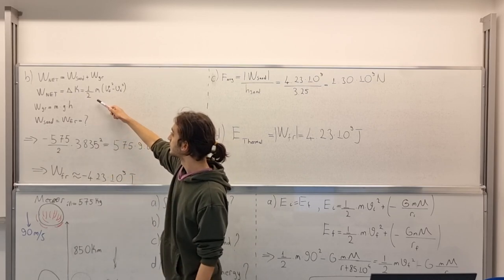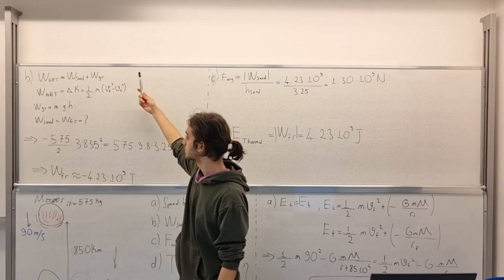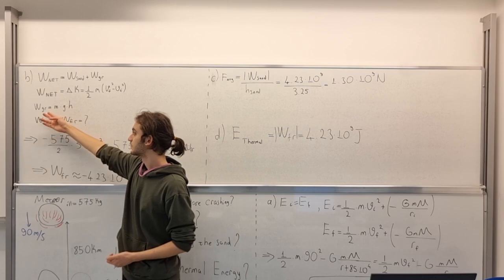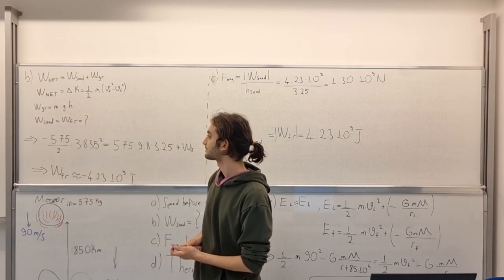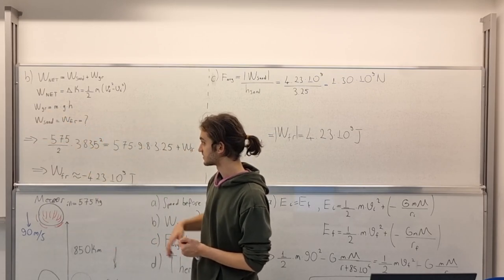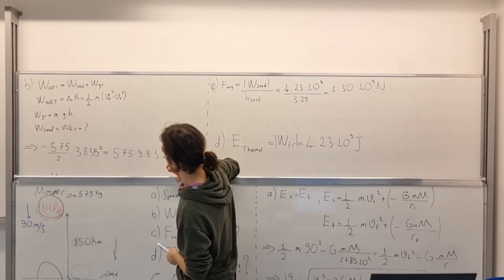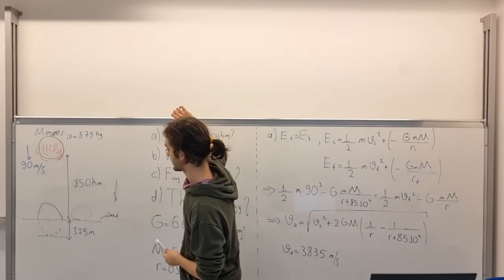That means one half M VF squared minus VI squared. You know that. We have work done by gravitation as MGH. Why?